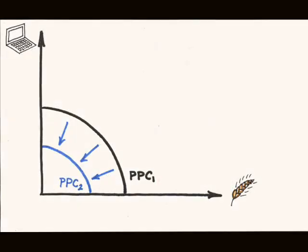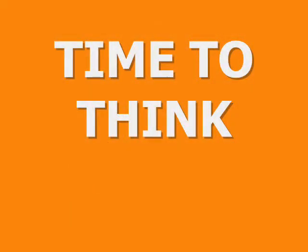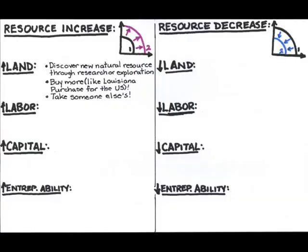Now I want you to think about something. What does it actually mean to say that there's an increase or a decrease in resources? How does it happen? More specifically, how would a society see more land, more labor, more capital, or more entrepreneurial ability? In this table, I've gotten you started. Now you complete the rest.